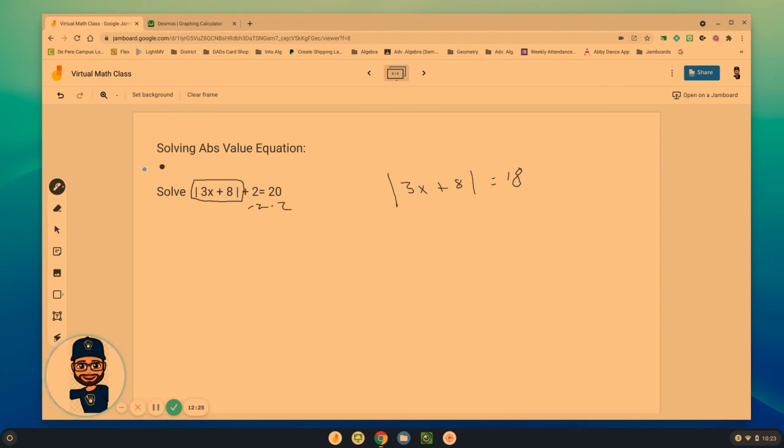Absolute value of 3x plus 8 has to equal 18. Alright? Now once again, if I wanted to, I would cover this up. Imagine it's not there and say that the absolute value, whatever I get in here has to be 18 or whatever I get in here has to be negative 18. So it has to be 18 or it has to equal negative 18. What do I have inside of there? The 3x plus 8. The 3x plus 8.